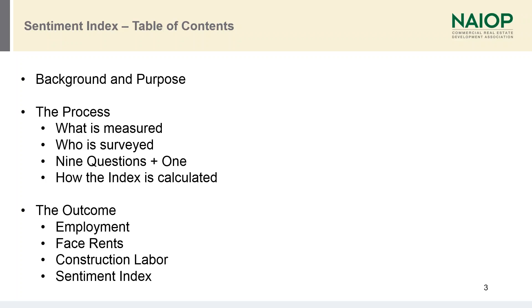Just as a roadmap for what we're going to be talking about today, we've broken this seminar into three components: a little bit of background and purpose, talk about the process of how the index is computed based on the 10 questions that are part of the survey, and then we're going to look at four specific questions and how you as a member of NAEP can interpret that information and understand what it means going forward.